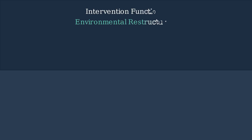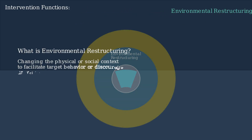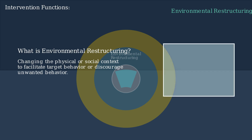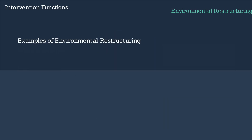Environmental restructuring is an intervention function that focuses on changing the physical or social context to support behavior change. Within the behavior change wheel, environmental restructuring is located in the middle wheel among other intervention functions. It involves changing aspects of the physical or social environment to make target behaviors easier to perform or unwanted behaviors harder to engage in. Physical context refers to the material environment around us, and changes to it can significantly influence behavior.